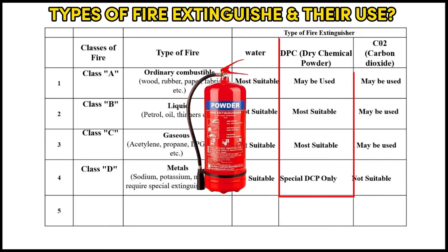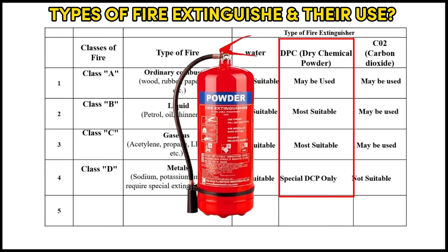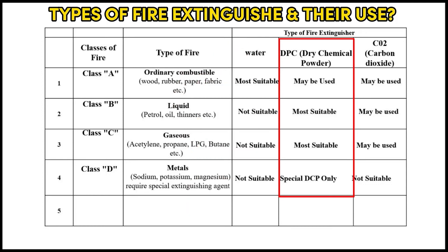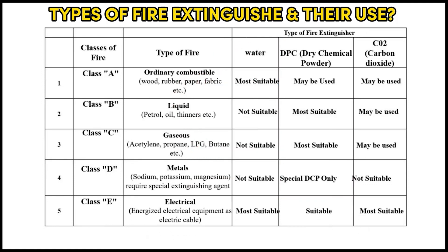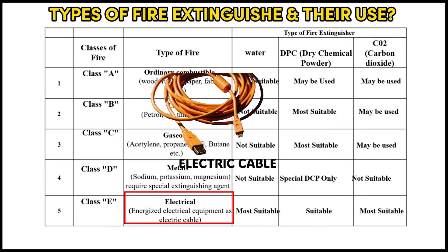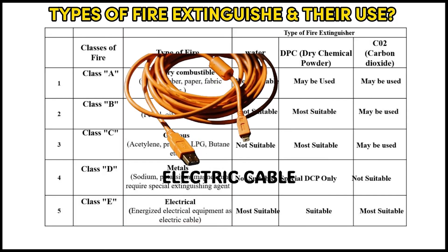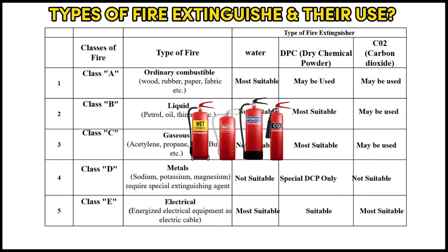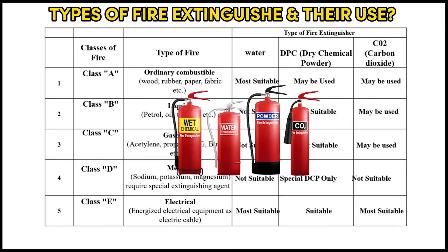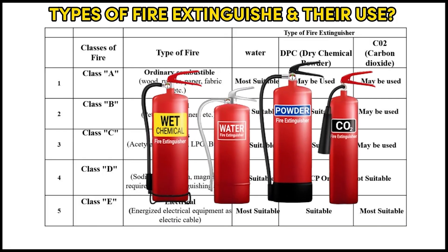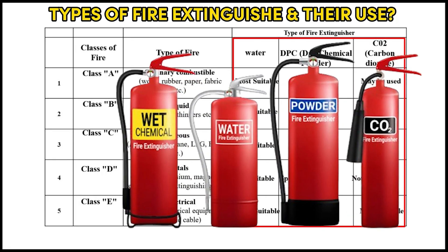Class E fires include energized electrical equipment such as electric cables — DCP (dry chemical powder) and carbon dioxide fire extinguishers are most suitable.